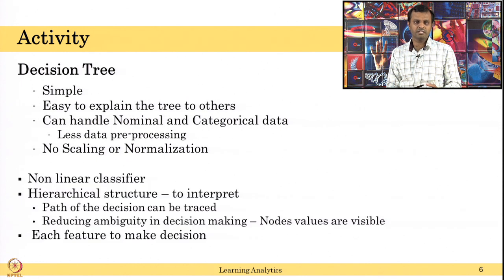It is also a non-linear classifier, it is not like a regression classifier. And the hierarchical structure of the tree is easy to interpret because the path to decision making is traced. How the particular decision has been made for each thing can be traced from the root to the leaf.